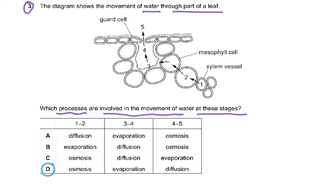Which processes are involved in the movement of water at these stages? One to two out of the xylem into the cell would be osmosis. The xylem won't have a partially permeable membrane, but this cell would have a partially permeable membrane. So one to two had to be osmosis.